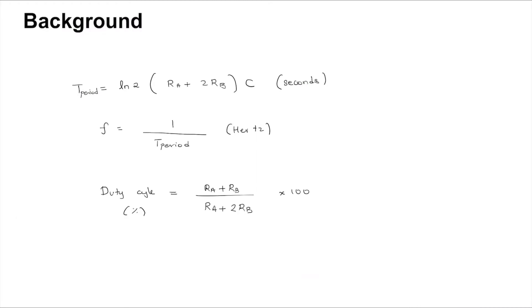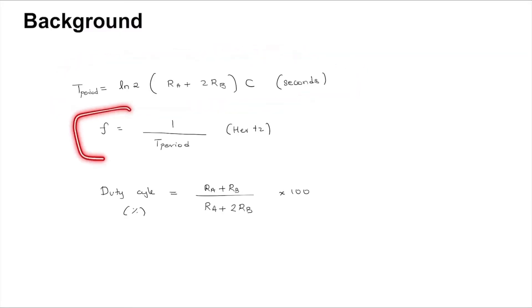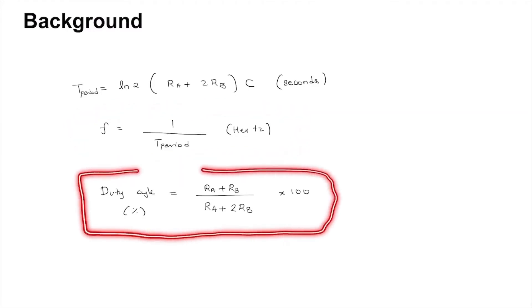A little background about the 555 timer: the time period can be given by this formula, the frequency is 1 over time period in hertz, and the duty cycle is given by this formula.